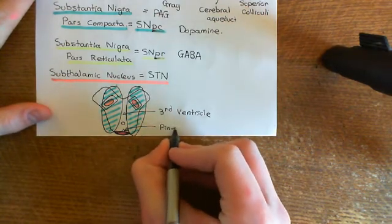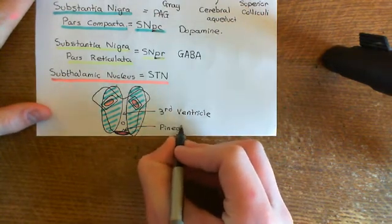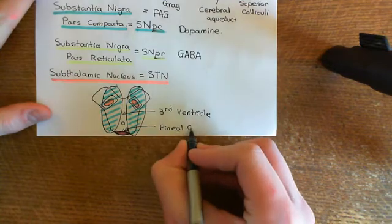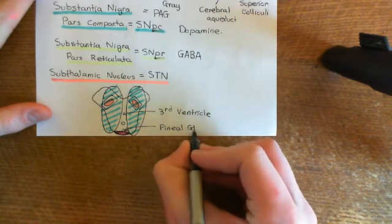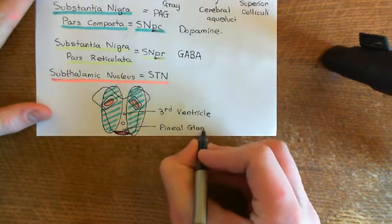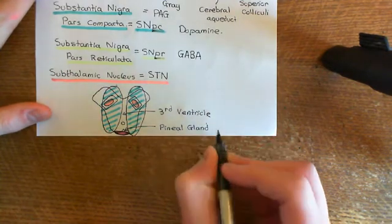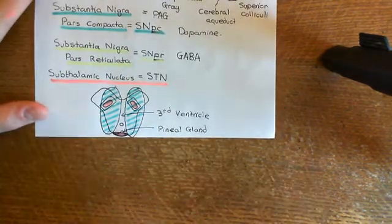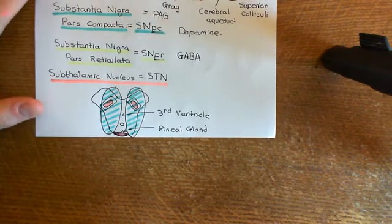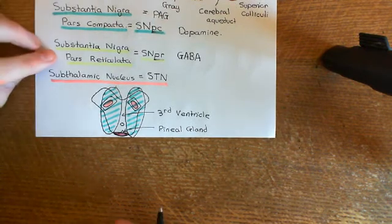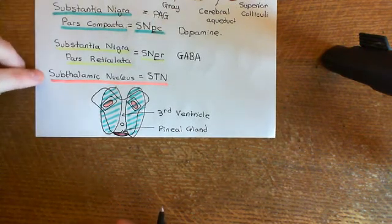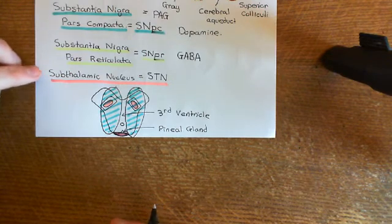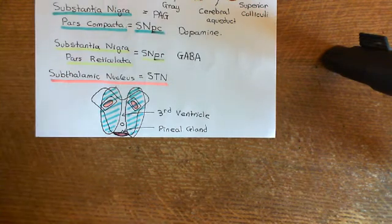Moving on with the basal ganglia — we've now seen three separate basal ganglia nuclei: the substantia nigra pars compacta, the substantia nigra pars reticulata, and the subthalamic nucleus. However, there are more.